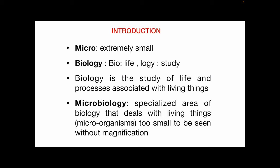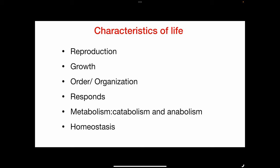Life has certain characteristics we need to know. The first is reproduction, which is the ability of the organism to make copies of itself or to procreate, and this can be done either sexually or asexually.